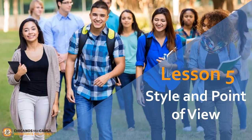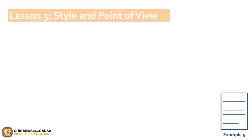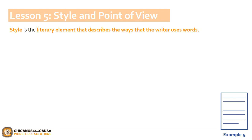We are now continuing to Lesson 5, Style and Point of View. A writer has many choices when deciding how to write a story. Style is a literary element that describes the ways that the writer uses words. A writer may choose to write using different types of language — that is formal language, slang, or spoken dialect. Another writer may also use a type of sentence structure — long, complex sentences, or short, clipped sentences. One writer may use powerful images or symbols, while another writer writes a plain, non-imagery story.